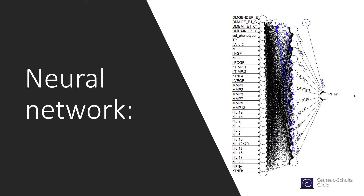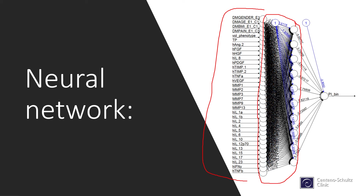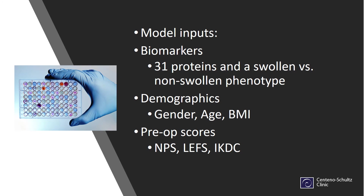This is our use of a neural network — this is actually what it looks like, with all the different chemicals we're measuring and all the different connections between the neurons, meaning the artificial nerve cells set up within the program, and then the output over here.